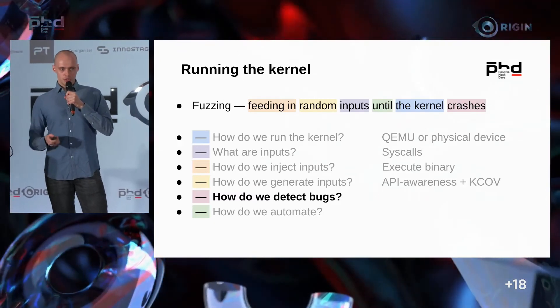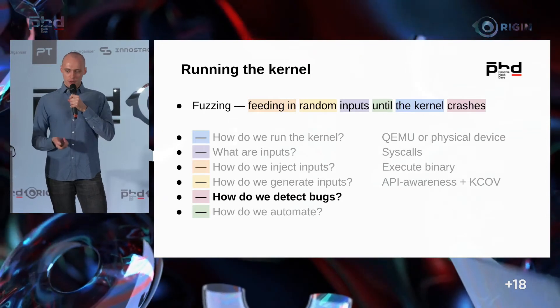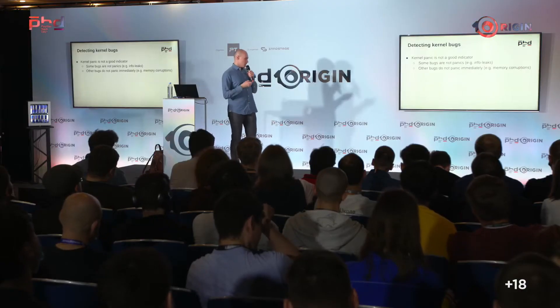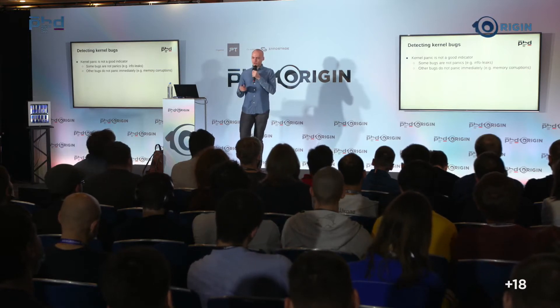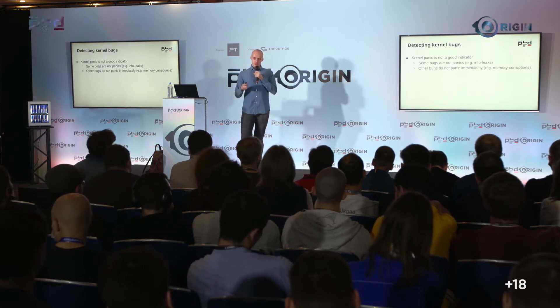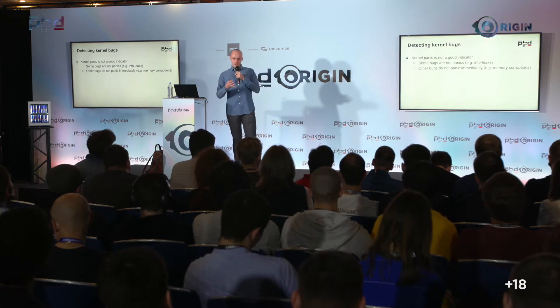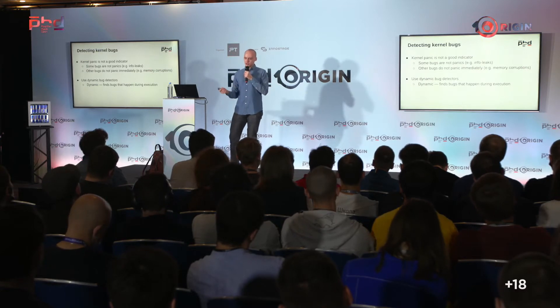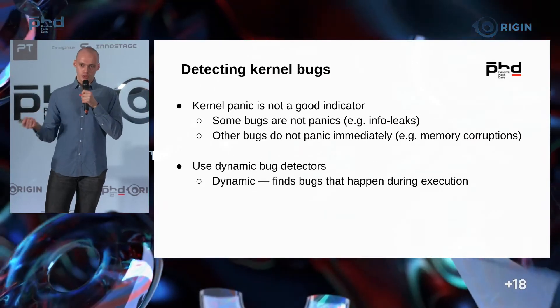For bug detection, let's think of something better than panics. Panics work poorly as an indicator because some bugs don't generate panics, and especially in memory corruption cases, the panic may not happen at the same time as the corruption. Imagine a double free — it happens in one place and nothing bad happens until that buffer is reused by something else. Dynamic bug detectors have been built for the kernel — they run during execution, making them a great fit.